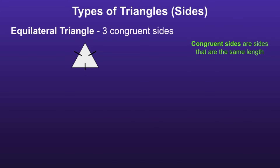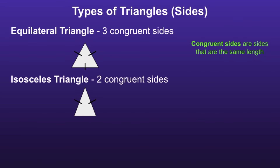So an equilateral triangle has three sides that are the same length. An isosceles triangle is a triangle with two congruent sides, or two sides of the same length.